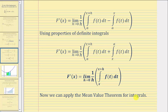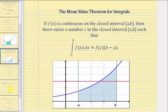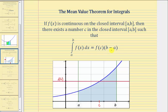Now we're going to apply the Mean Value Theorem for integrals. The Mean Value Theorem for integrals states that if f of x is continuous on the closed interval from a to b, then there exists a number c in the closed interval from a to b such that the value of the definite integral is equal to f of c times the quantity b minus a. To illustrate this using a non-negative function f of x — if we integrate f of x from a to b, it gives us the area of the shaded region. The Mean Value Theorem tells us there's some value c in the closed interval where f of c, the height of this rectangle, times b minus a, the width, gives the same value as the definite integral — so the area under the function equals the area of this rectangle.